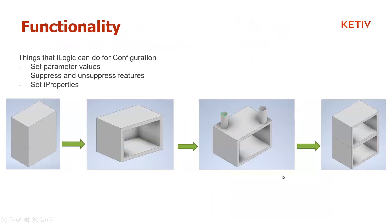Things that iLogic can do for configuration modeling within an assembly and at a part level: you can set parameter values to drive any dimensions you want changed, you can suppress and unsuppress features so things show up or don't show up, and you can also set iProperties.